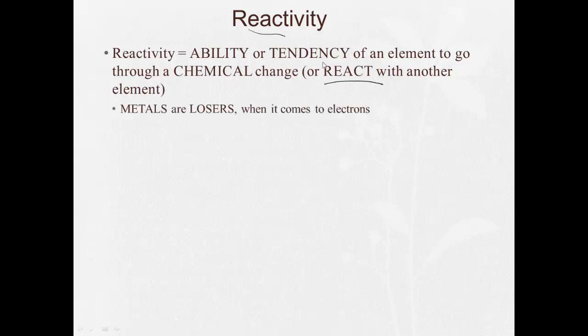Now, a couple things to remember. Metals are losers when it comes to electrons. Metals are going to tend to lose electrons and form positive ions. Non-metals are bullies when it comes to electrons. They're going to gain electrons and form negative ions.